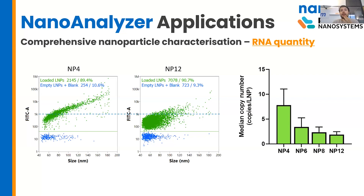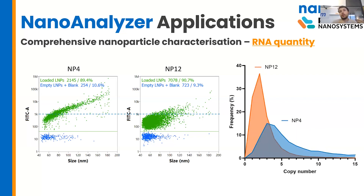Another way to display this data is to look at the histograms. With the MP4 histogram in blue, we might have larger copy numbers in general, but we have quite a wide spread — more heterogeneity in the amount of RNA contained. Whereas in the MP12, yes, we've got fewer copy numbers in general contained by these LNPs, but you could describe this as a more homogeneous distribution of the RNA. This gives us two parameters we can begin to explore with this novel nanoflow cytometry approach.